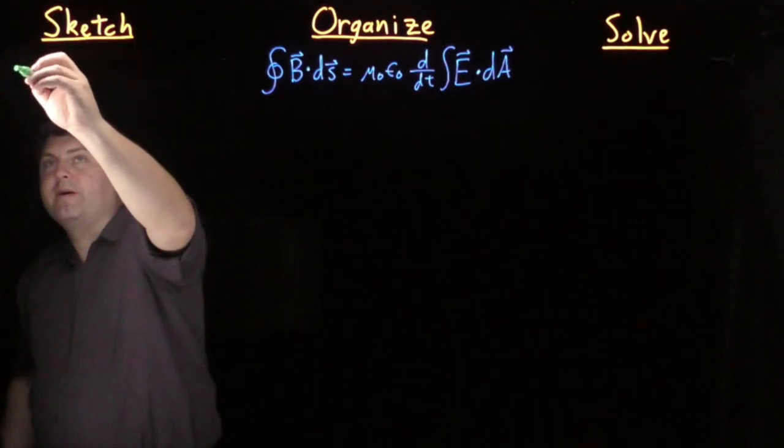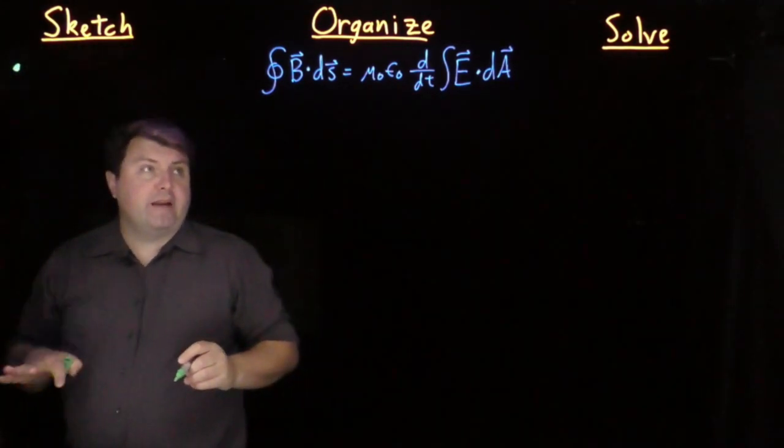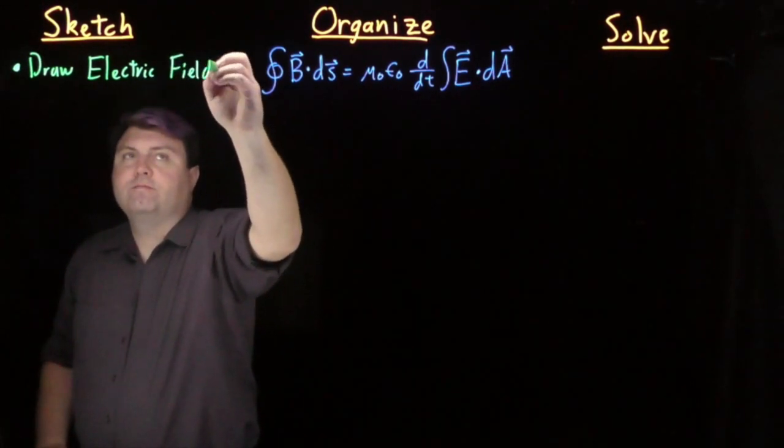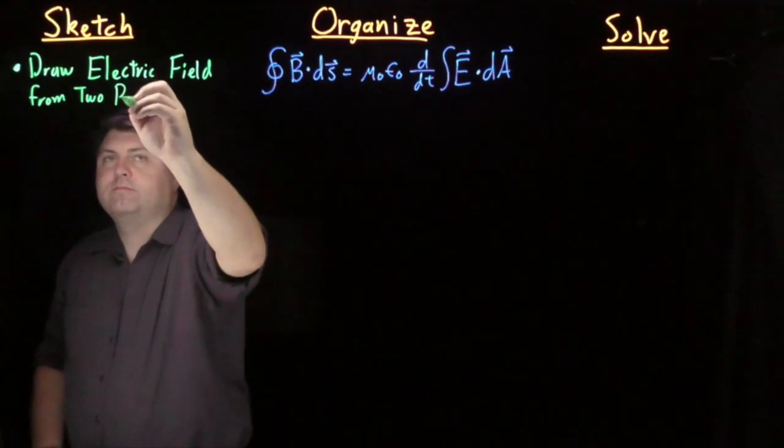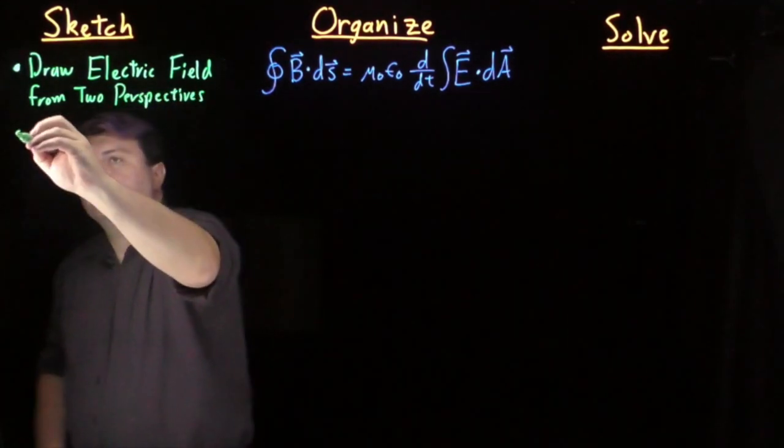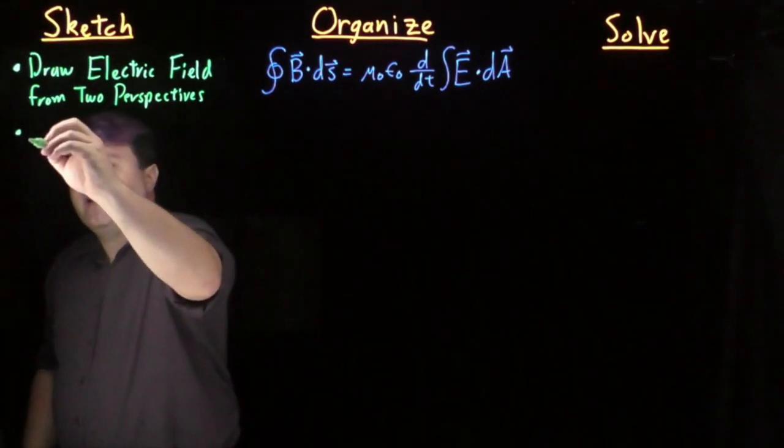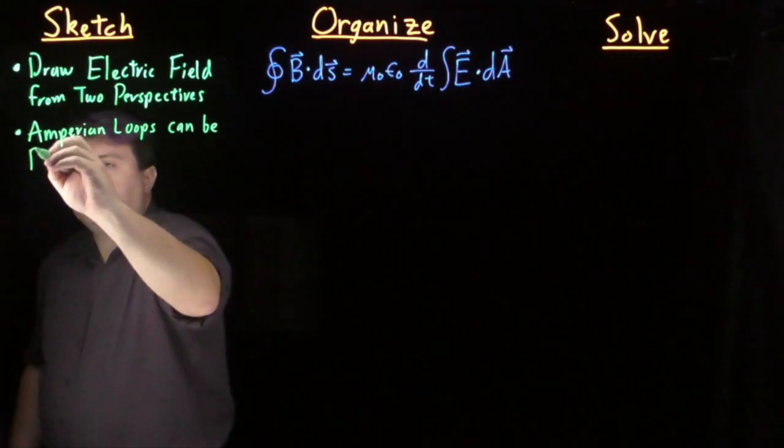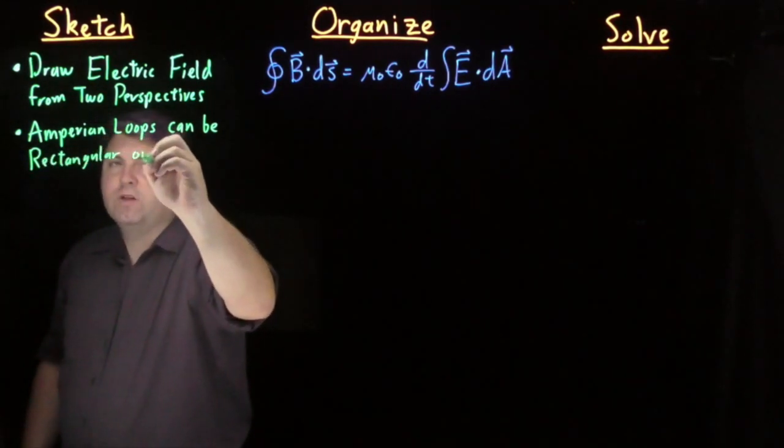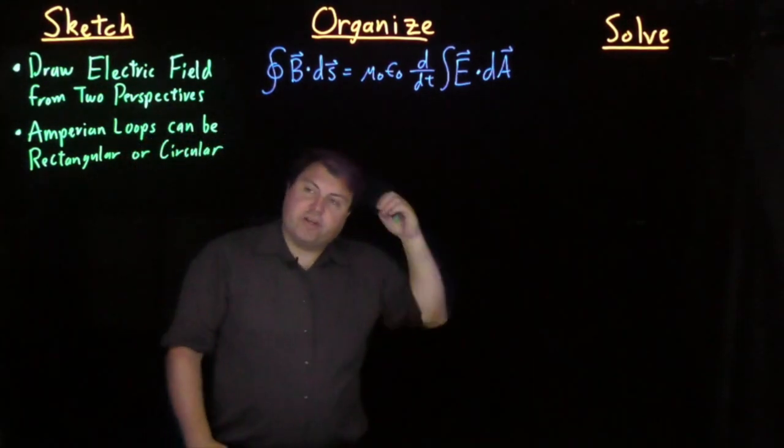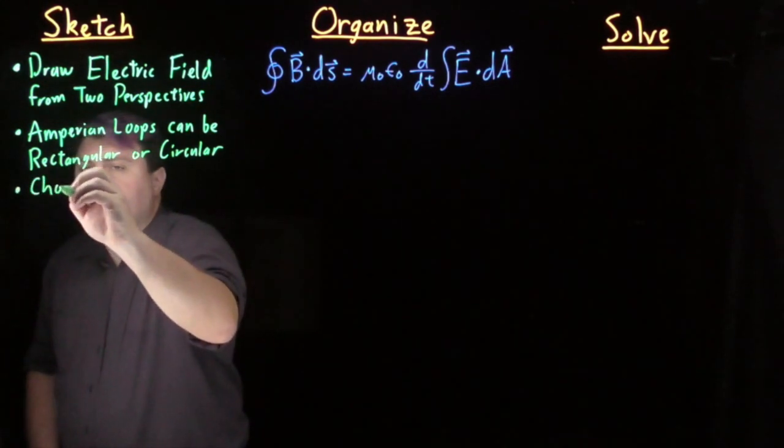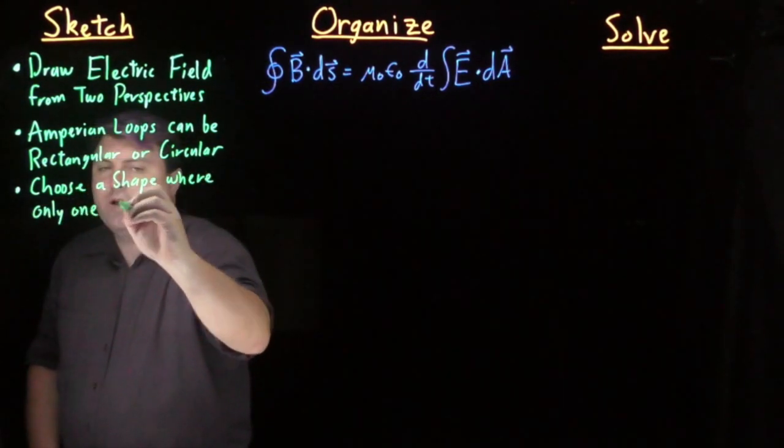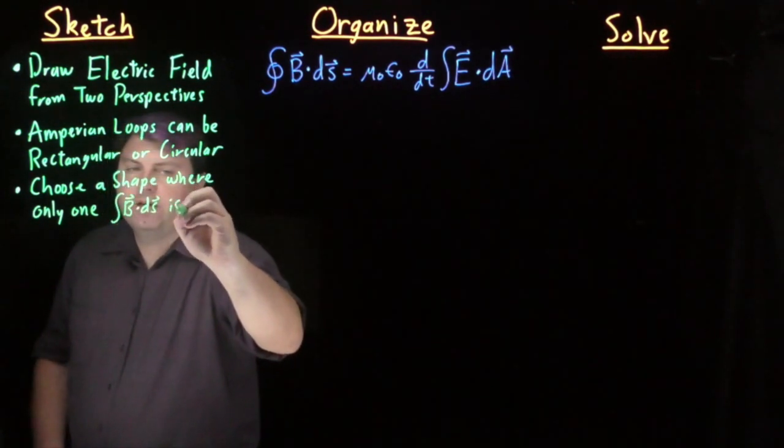So in our sketch step, for Faraday's law we wanted two perspectives of the magnetic field. Now we want to draw the electric field from two perspectives. And since this is Maxwell's correction to Ampere's law, we still have Amperian loops. And our Amperian loops can still be rectangular or circular. Don't want to consider any other shapes for this class.